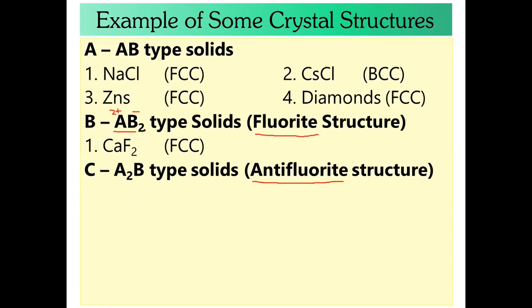Anti-fluoride is the inverse structure. Fluoride means the ultra structure — cations are spheres. Anti-fluoride means cations are voids and anions are spheres.